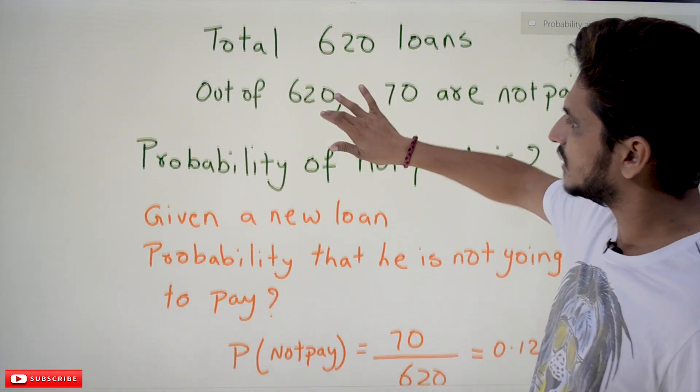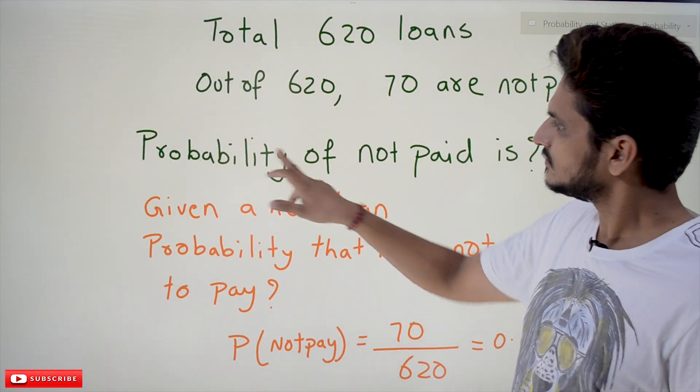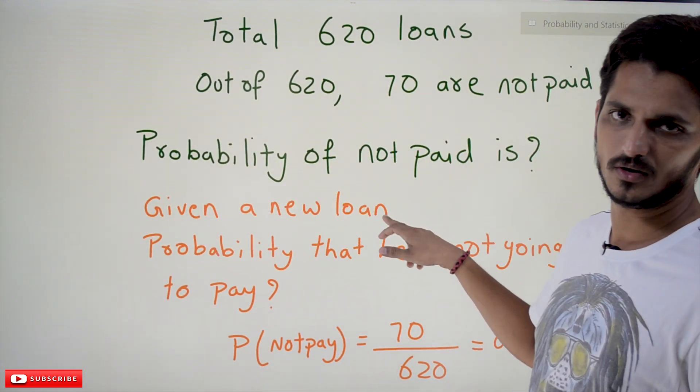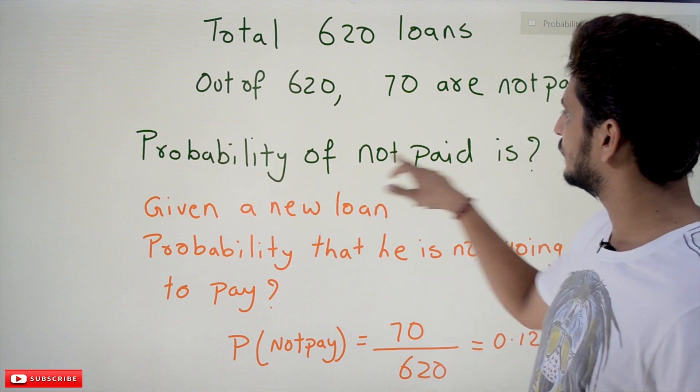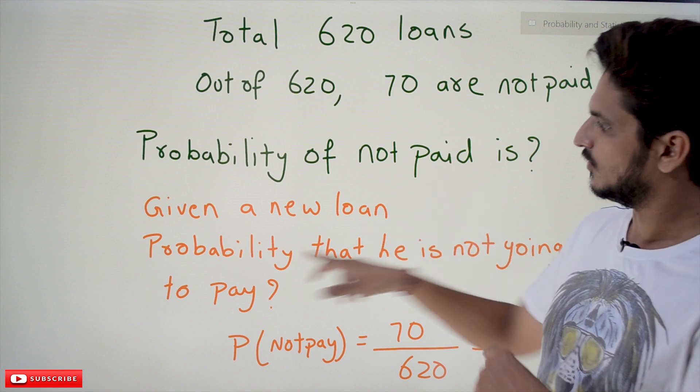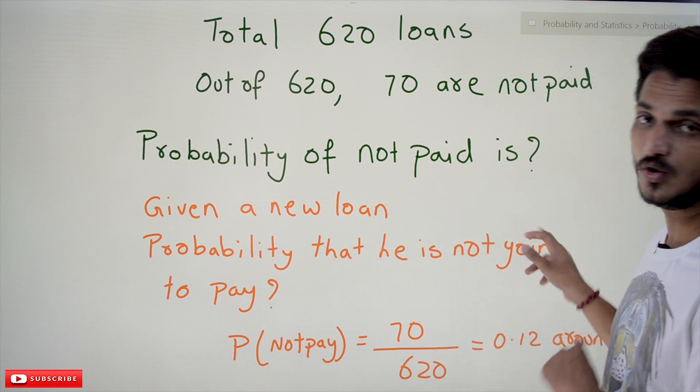From this, the question may be like this: suppose if you give a new loan, the bank is going to ask you what is the probability of not going to pay? What is the probability that he is not going to pay?